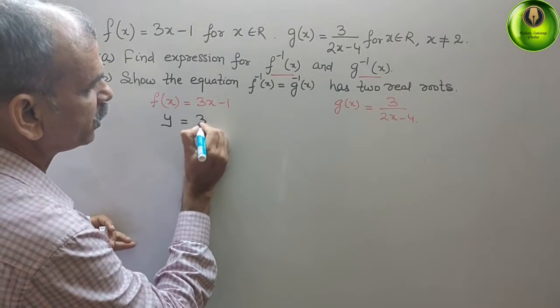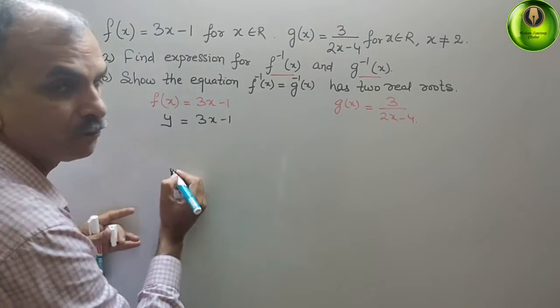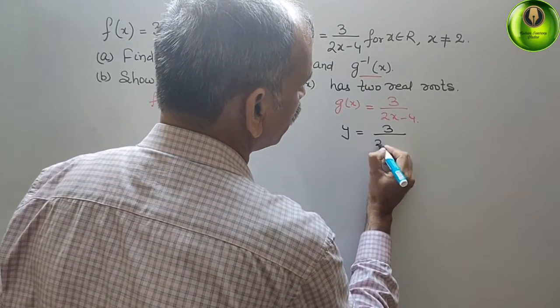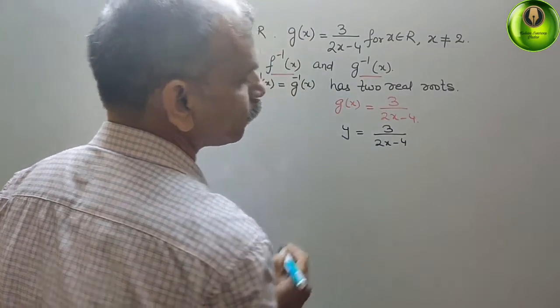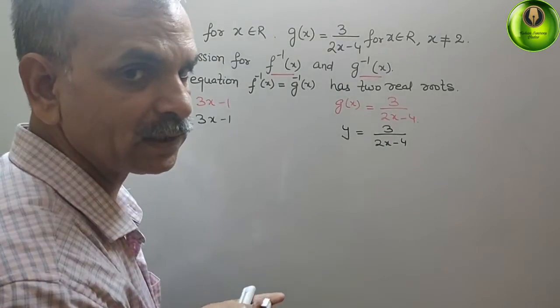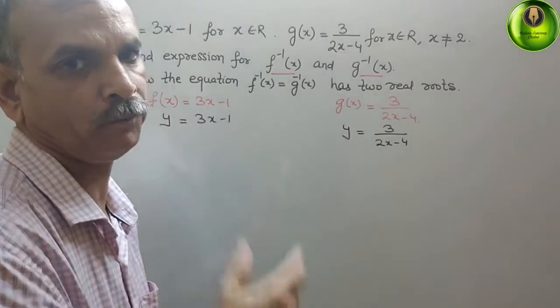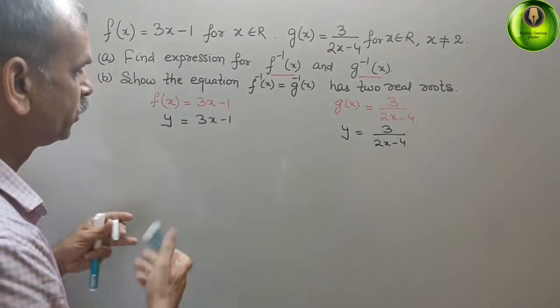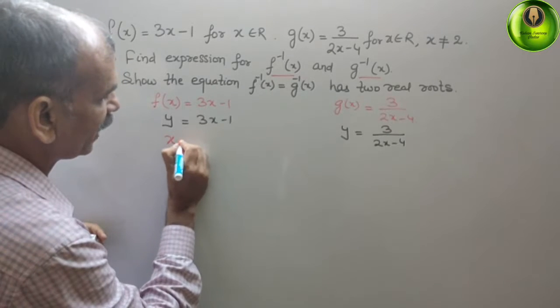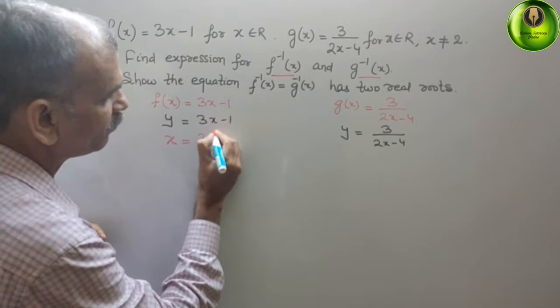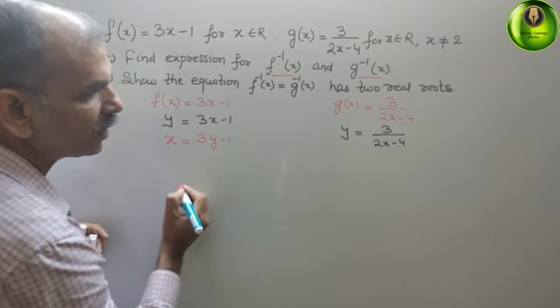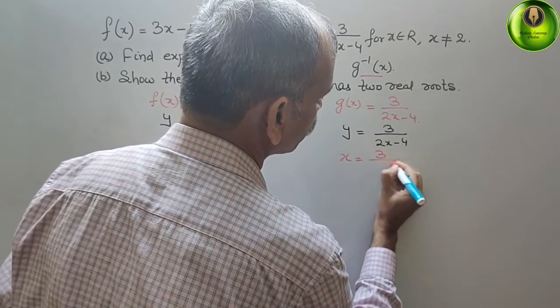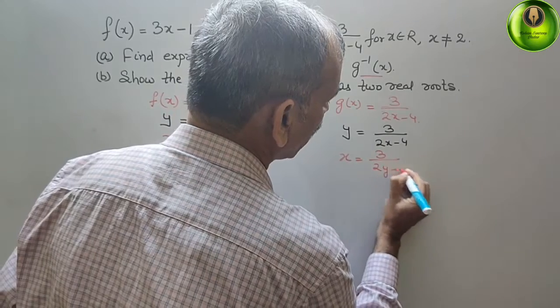So y equals 3x minus 1. Now replace y with x and x with y. So it will become x equals 3y minus 1. Here also same, x equals 3 by 2y minus 4.